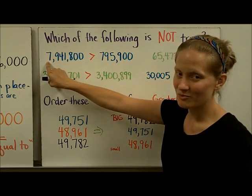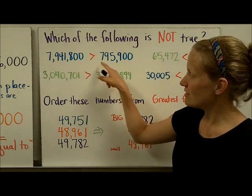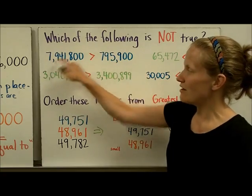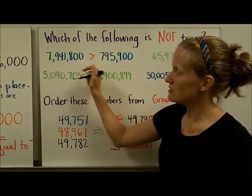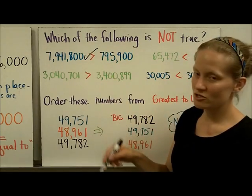There are seven digits here and only six digits here. I don't even have to compare any more numbers because I know this has more digits. This is bigger. So this statement is true.